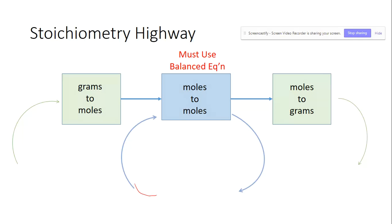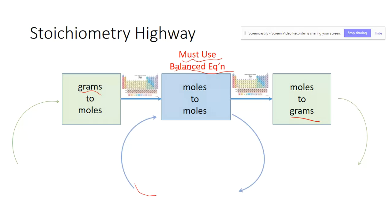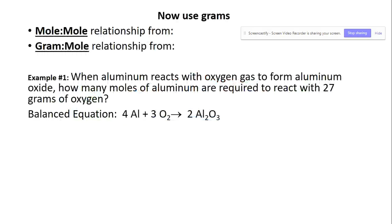Now we're going to start with grams. If we have to start with grams or if we have to end with grams, that means the periodic table is going to get involved. Depending on what the problem asks — if it asks for grams, make sure you're using a periodic table. You will always use the balanced equation part; you will always have to convert from one mole to another. Then depending on where you're ending, you could be done if the question just asks for moles, or if it asks for more grams, you have to go back to the periodic table. The mole-to-mole relationship comes from the balanced equation.